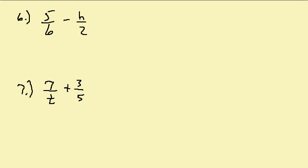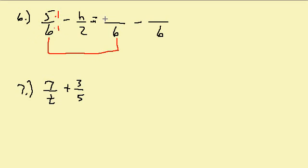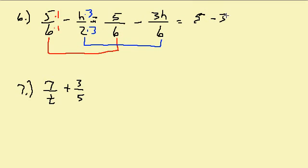Let's take a look at some more: 5 over 6 minus h over 2. We need a common denominator, which is 6. We multiply the denominator 6 by 1 and the numerator by 1: 5 times 1 is 5. We multiply the denominator 2 by 3 to get 6, so we multiply the numerator h by 3: h times 3 is 3h. So we get 5 minus 3h over 6. The 5 and 3h are not like terms, so we can't combine them. That's our final answer.